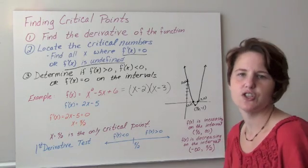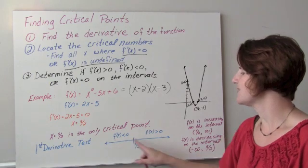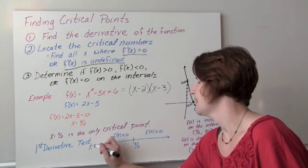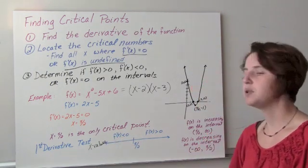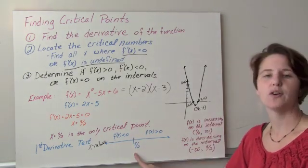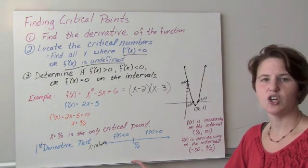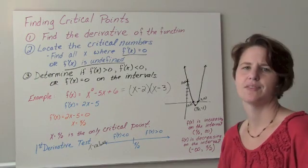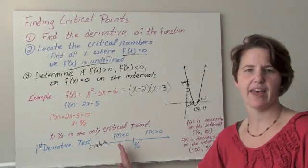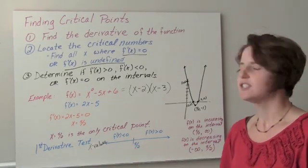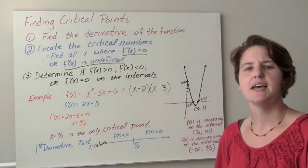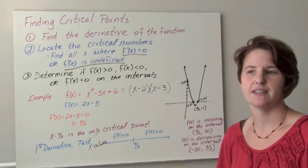Here's how the first derivative test works. We're going to draw a number line representing our x values and plot the critical points from left to right. We only have one critical point — it's at 5/2. Now I want to determine if the slope is positive or negative. For the first derivative test, there are two intervals to consider: left of 5/2 and right of 5/2. So we're going to pick a test point.